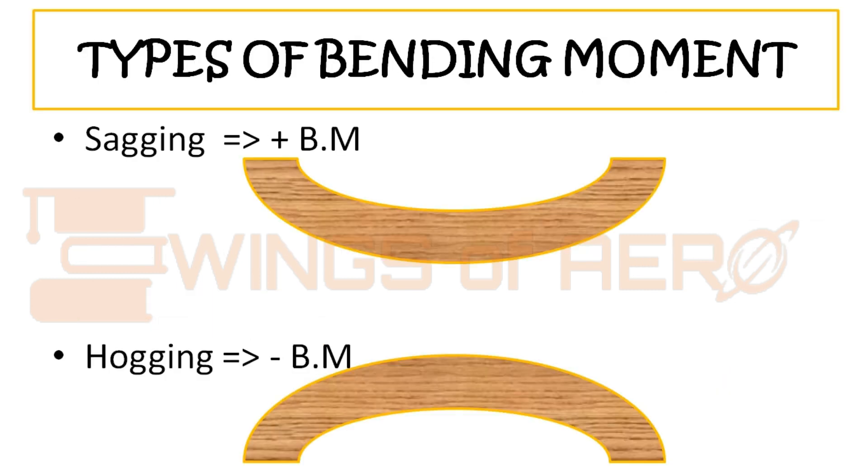There are types of bending moment: sagging and hogging. When the bending moment gives a positive impact or positive bending moment we call it sagging, and when the bending moment gives a negative impact we call it hogging.